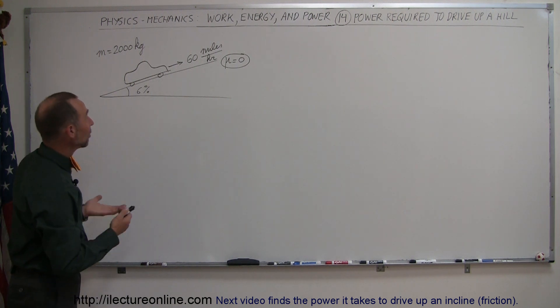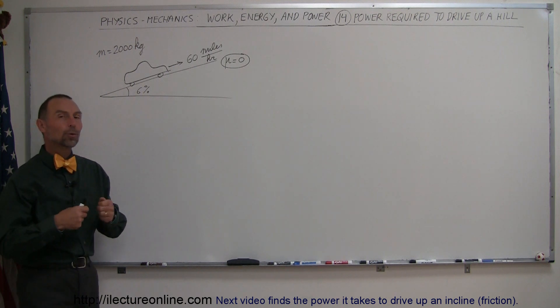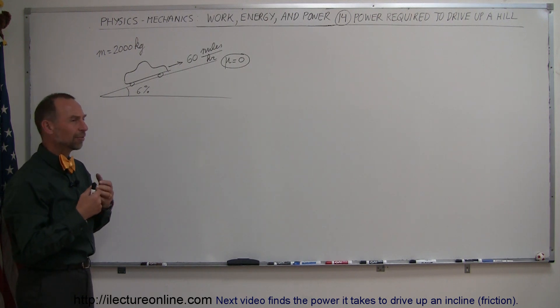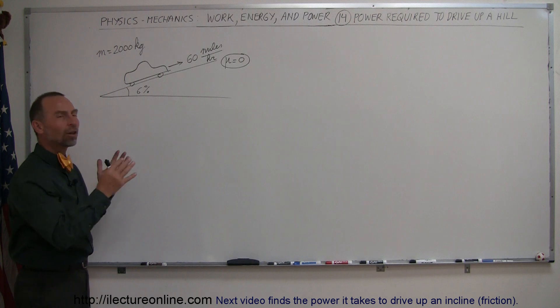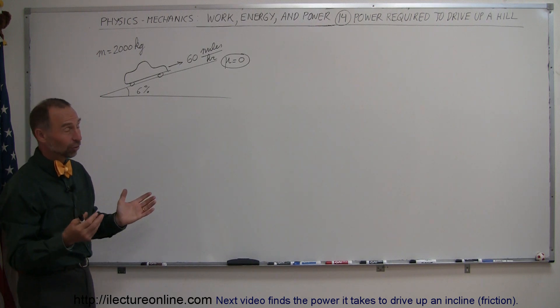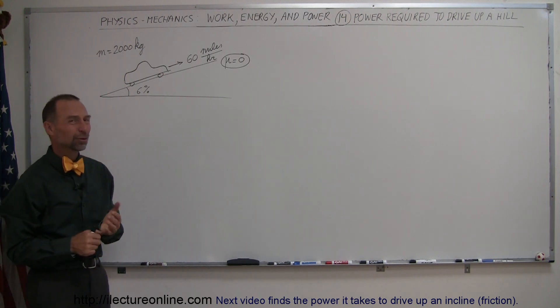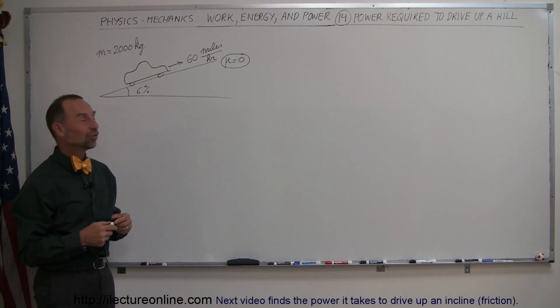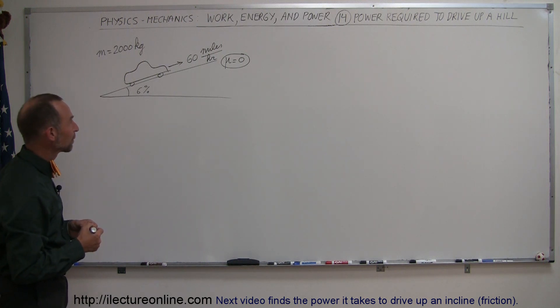And then again, assuming that no energy is lost in the internal workings of the engine itself, so whatever the engine puts out, it uses all of that energy to go up the hill, which of course is also not true. Typically a car only uses about 25% of its energy that it puts out.